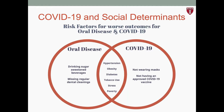The social determinants slide transitions us from how oral health affects COVID-19 into how COVID-19 affects population oral health. We present a Venn diagram showing how risk factors for oral disease and COVID-19 overlap. Because Module 4 of the Global Health Starter Kit already covers social determinants, learners should be encouraged to revisit Module 4 for more details.